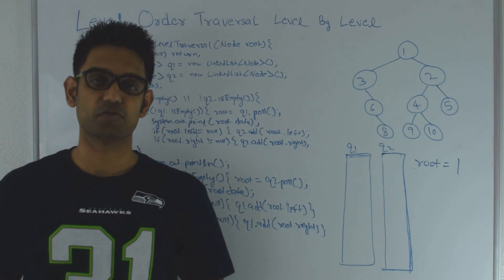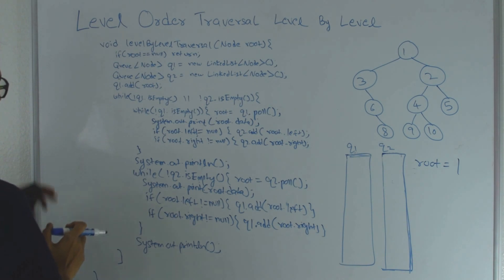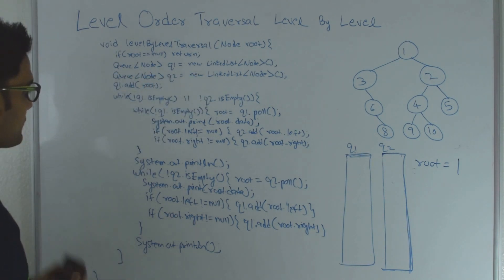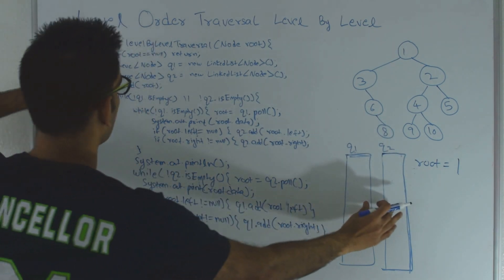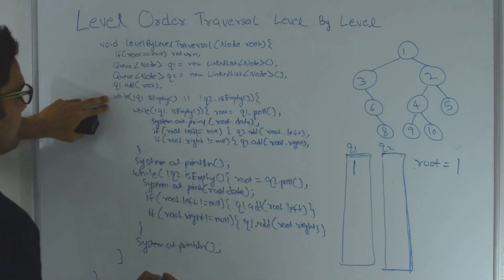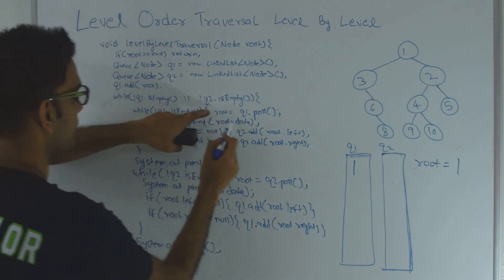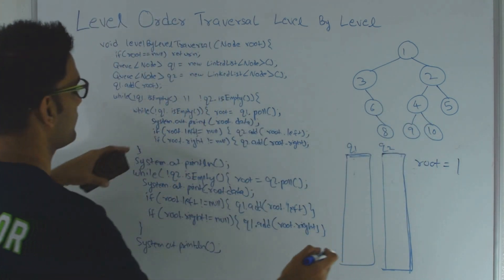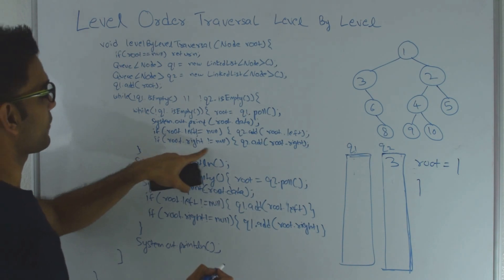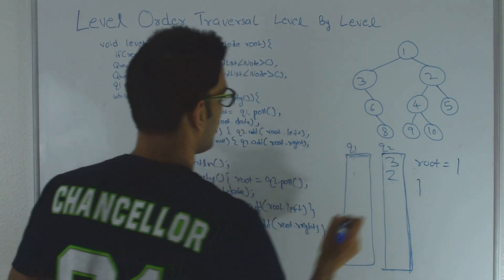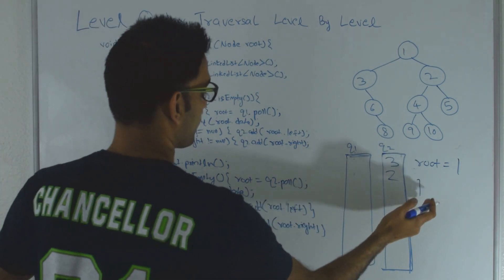Here is the code for level by level traversal using two queues. The function is called level by level traversal, it takes the root of the binary tree and returns nothing. If root is null we just return. Otherwise we initialize two queues backed by linked lists. My root is 1, root is not null, so I initialize q1 and q2 and add 1 to q1. In the outer while loop q1 is not empty so we go into the inner while loop. I pull from q1, root becomes 1, and I print 1. If 1 has a left child we add that to q2. If 1 has a right child we add that to q2. Now q1 is empty so we break out of the inner while loop, print a new line, and everything next will be printed on the next line.